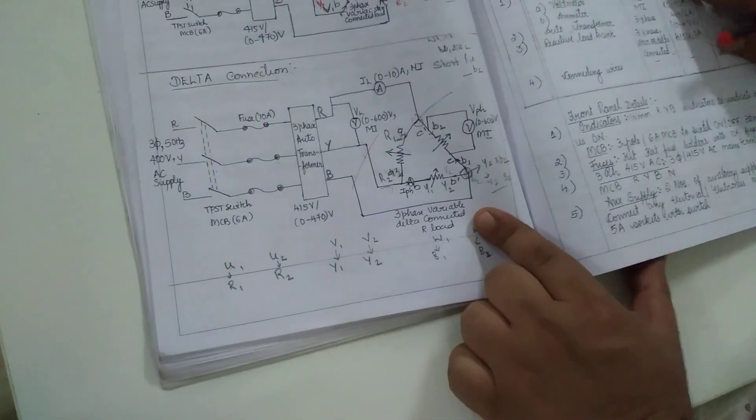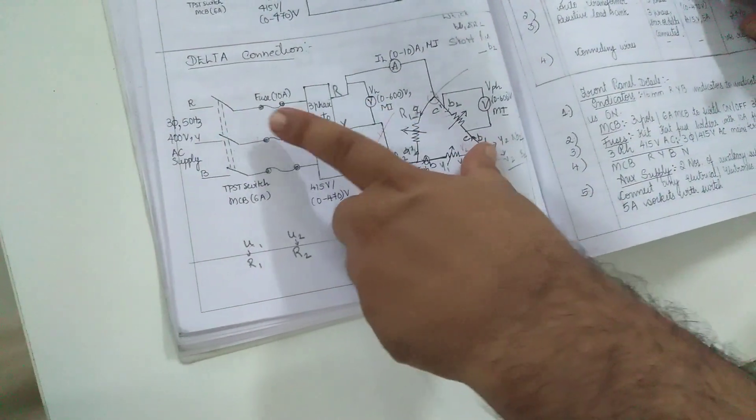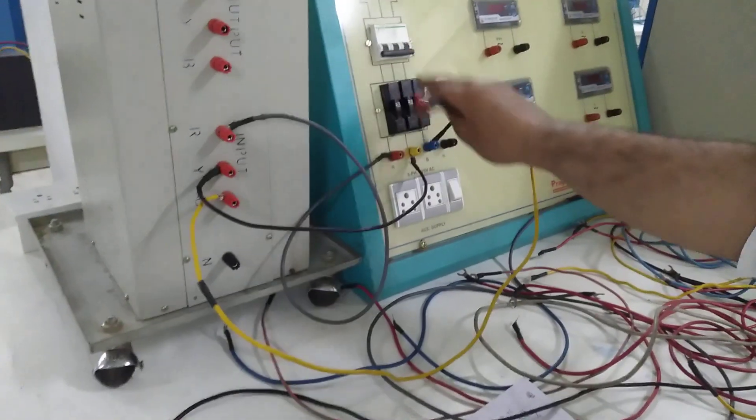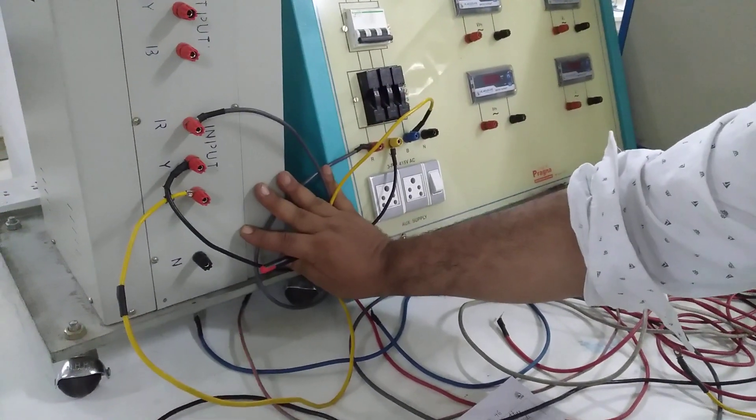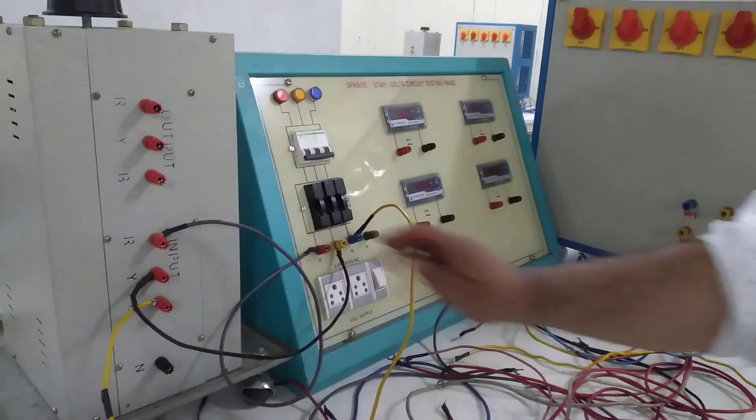So this is the circuit connection for the delta. As you can see, just like star, we have this input connection. You can see this input is going to input. Once you have given this, then no need to touch this connection in the entire circuit. The other connections will follow. This connection is at the input already.